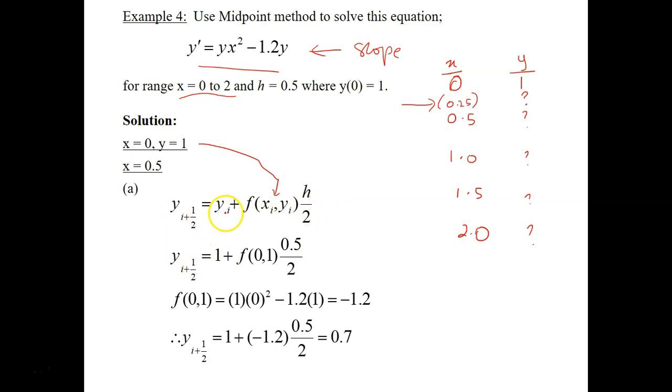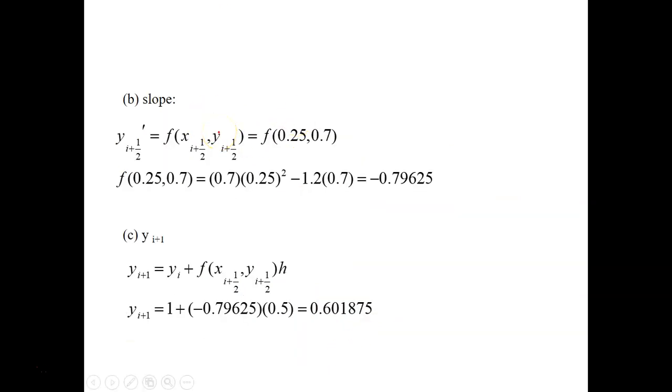Just substitute y_i which is 1. y_i equals 1 plus the slope—using this equation you calculate the slope and just plug in the value of 0 and 1 into this equation. So f(0,1), this is the slope. Just substitute y here is 1, x is 0 minus 1.2 times y here is 1, so you get this as the slope. Substitute this value back into the equation: 1 plus this one is negative 1.2 times 0.5 over 2. This is the step size. So you get 0.7.